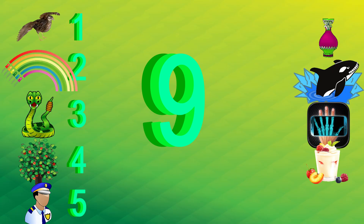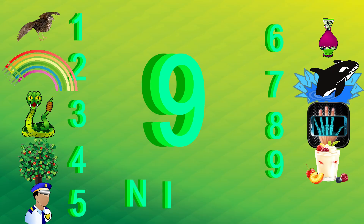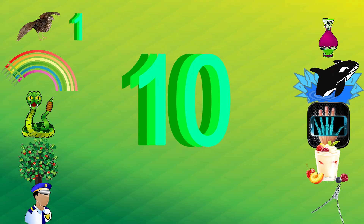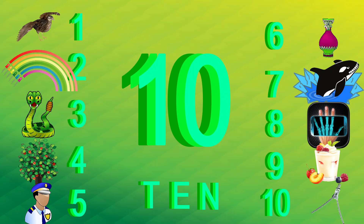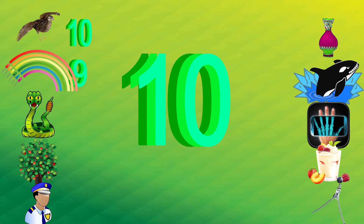1, 2, 3, 4, 5, 6, 7, 8, 9 - N I N E. Y for yogurt. 10 - 1, 2, 3, 4, 5, 6, 7, 8, 9, 10 - T E N. Z for zipper. Now counting down: 10, 9, 8, 7, 6, 5, 4, 3.